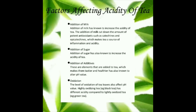Next is oxidation. The level of oxidation of tea leaves also affects the pH value. Highly oxidized tea, for example black tea, has different acidity compared to unoxidized or lightly oxidized tea, for example green tea. It is also found that the amount of tea leaves or tea powder also determines the acidity of tea — greater the amount of tea leaves used, greater will be the acidity. Thank you.